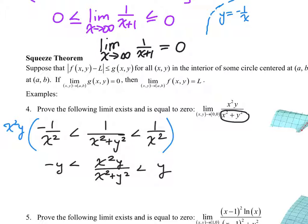Now applying the limit as x, y approaches 0, 0 to all parts of the inequality: replacing y with 0 on the low and upper bounds gives 0 on both sides. So the limit as x, y approaches 0, 0 of that given function is sandwiched between 0 and 0 — it's a safe bet, by the squeeze theorem, that it's going to equal 0.